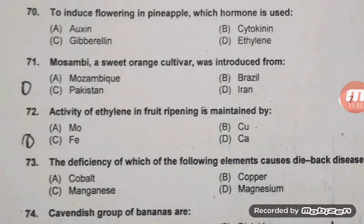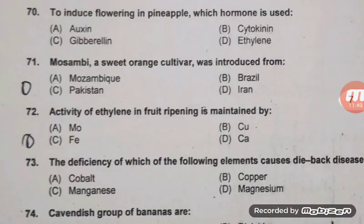The activity of ethylene in fruit ripening is maintained by — right answer C — iron. There are four to five questions asked in many exams related to ethylene. Ethylene activity is inhibited by silver (Ag). Ethylene synthesis is helped by copper. Ethylene absorbents include KMnO4; ethylene inhibitors include STS and AVG; and 1-MCP (methyl cyclopropane) is commercially used as an ethylene binder.